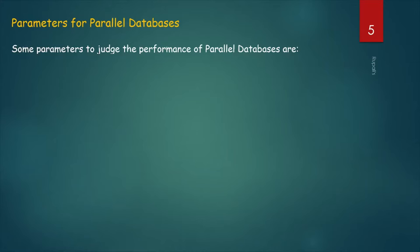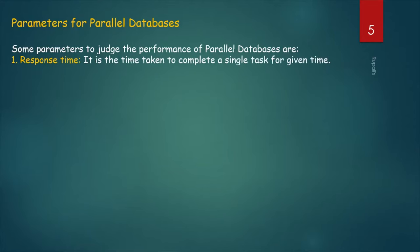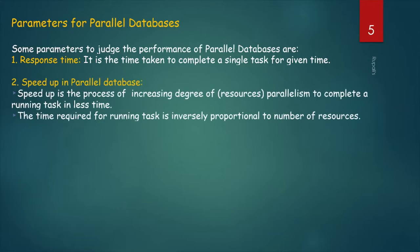Parameters for parallel databases. Some parameters to judge the performance of parallel databases are: Response time — the time taken to complete a single task for a given time. Next, Speedup in parallel databases. Speedup is the process of increasing the degree of parallelism, that is, increasing the degree of resources, to complete a running task in less time. The ability to execute a task in less time by increasing the number of resources is called speedup. The time required for running tasks is inversely proportional to the number of resources.